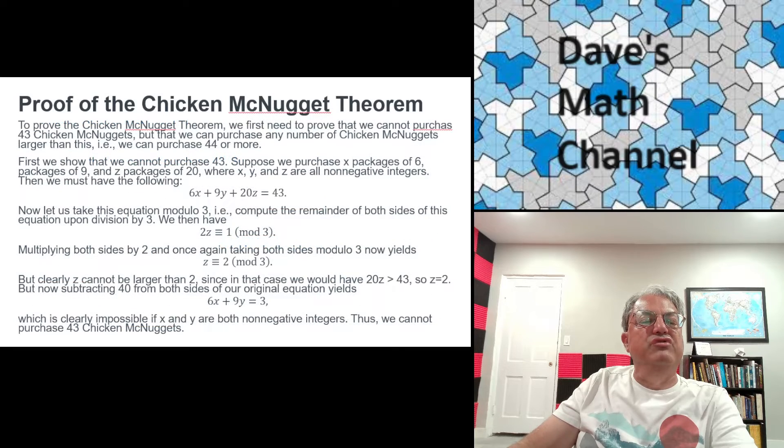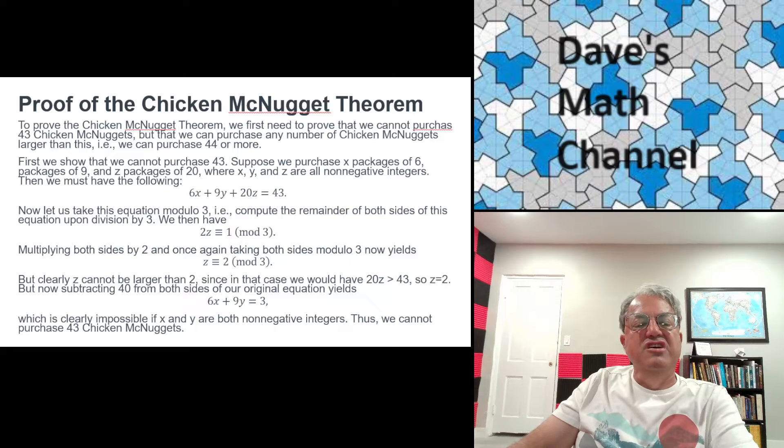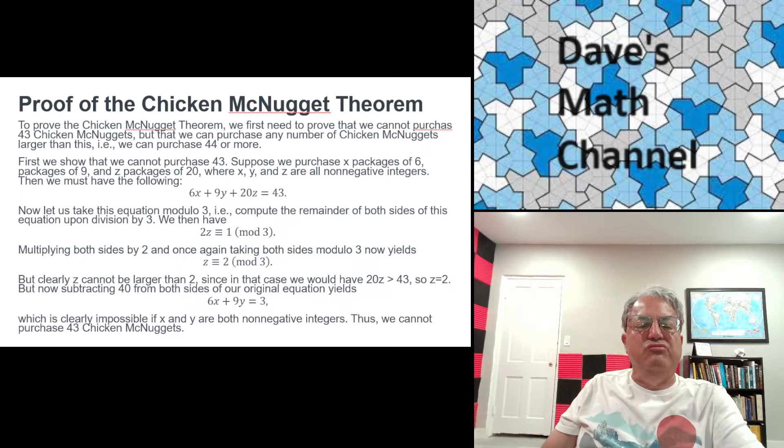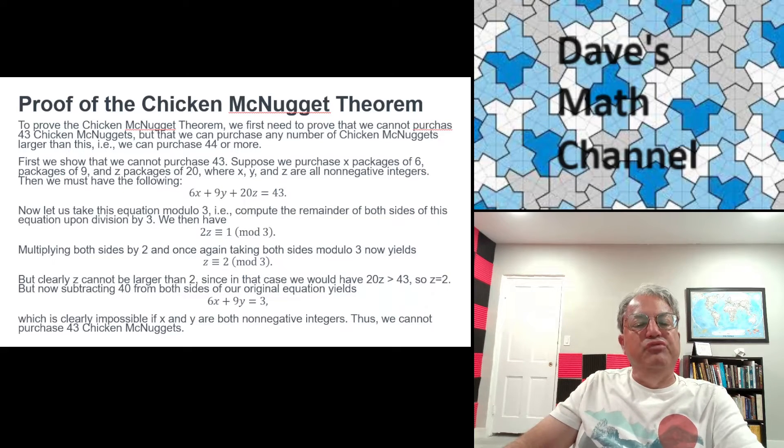But how could we prove the Chicken McNugget theorem? So here's what we want to prove. The claim is that the maximum number of Chicken McNuggets that you can't purchase is equal to 43. You cannot purchase 43, but you can purchase any number bigger than 43. How do you prove that? Well, I'm going to go through the proof. The proof involves modular arithmetic.